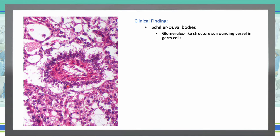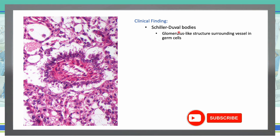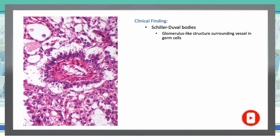Next, Schiller-Duval bodies. These are glomerulus-like structures surrounding a vessel in germ cells — a central vessel surrounded by tumor cells. We are going to see those in yolk sac tumor.